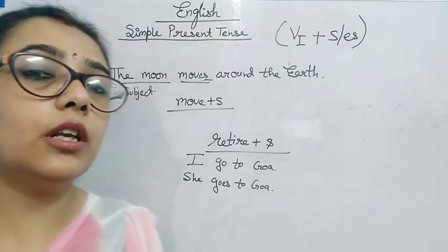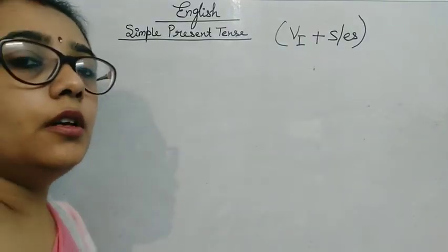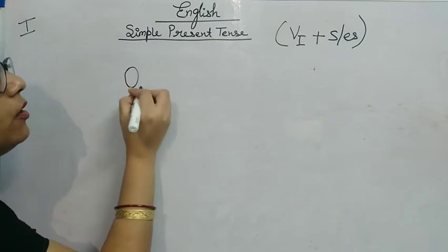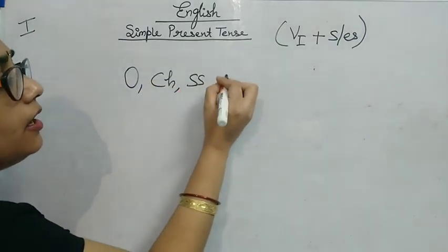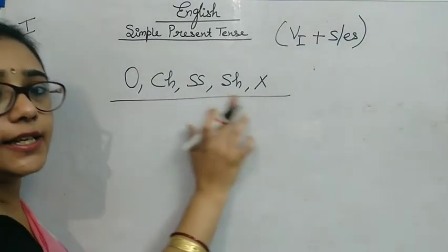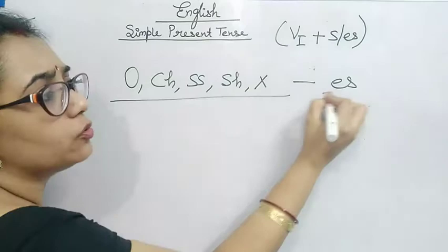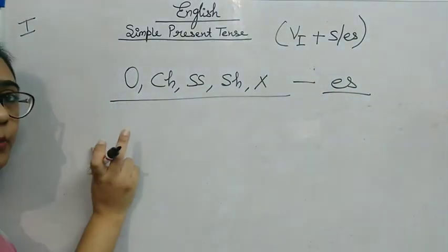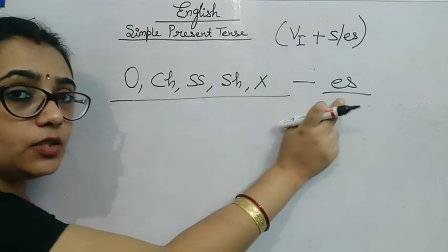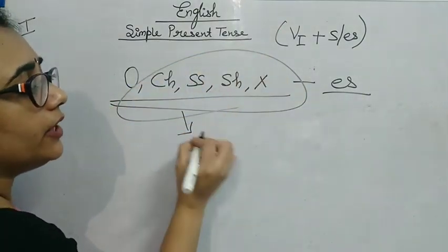Now we will discuss when to use S or ES. When a verb ends in O, CH, SS, SH, or X and the subject is singular, we add ES to the verb. When the verb does not end in any of these, we add S. For example: 'sleeps', 'eats', 'rises' — don't get confused that 'rises' has ES in it; 'rise' is the base verb and only S is added. Keep these things in mind.